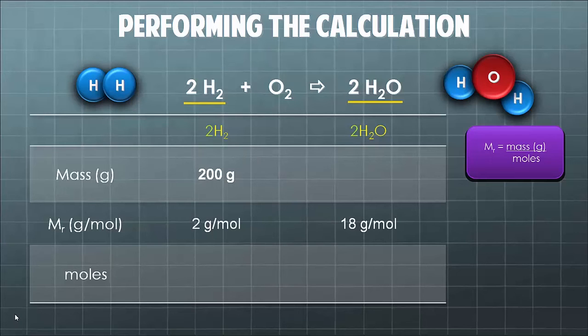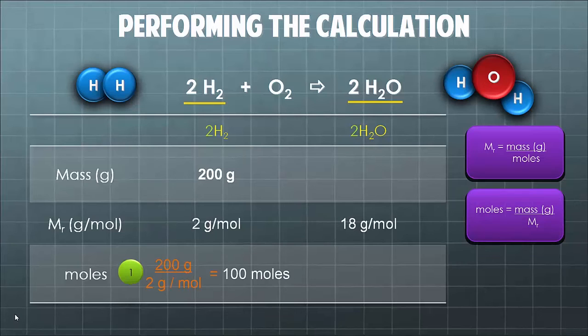It sounds like a really dumb thing to think about, but when the numbers get more complicated, it's really good to do this kind of little expectation calculation in your head. So we've got our moles is equal to our mass divided by our MR. That's 200 grams over 2 grams per mole gives us 100 moles.